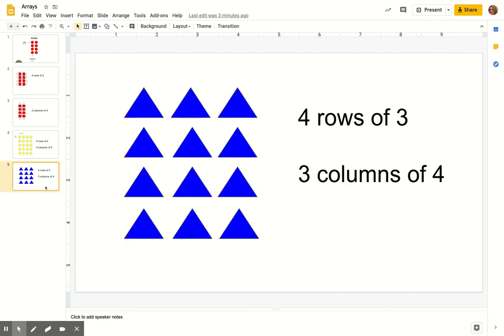And the last example we'll do today. Again, rows are horizontal. I didn't label it this time, so you have to remember. We have one, two, three, four rows. And in each row we have one, two, three. So four rows of three.